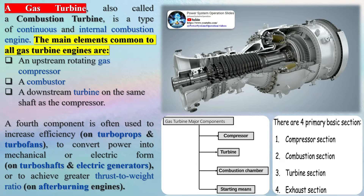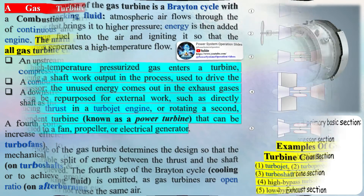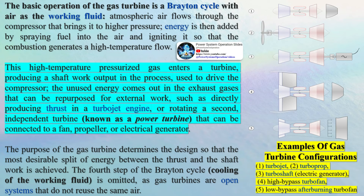The basic operation of the gas turbine is a Brayton cycle with air as the working fluid. Atmospheric air flows through the compressor that brings it to higher pressure. Energy is then added by spraying fuel into the air and igniting it so that the combustion generates a high-temperature flow.